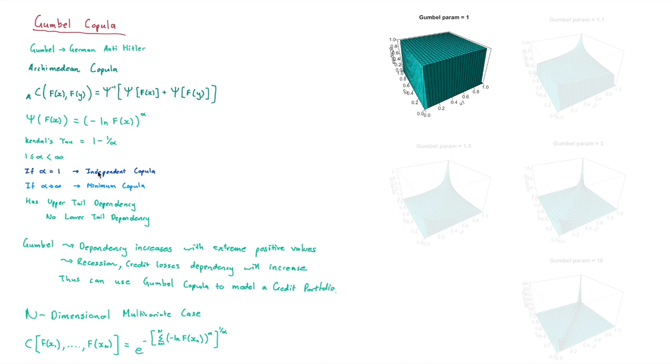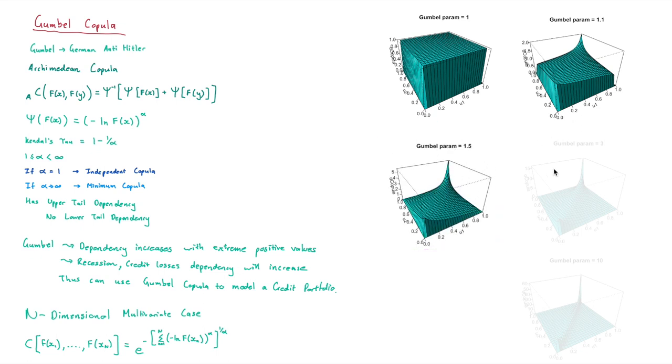it is the independent Copula, and it's kind of just this big block. Okay, nothing too special. But as soon as we start adding some sort of correlation, you can see how the graph starts to take this shape.